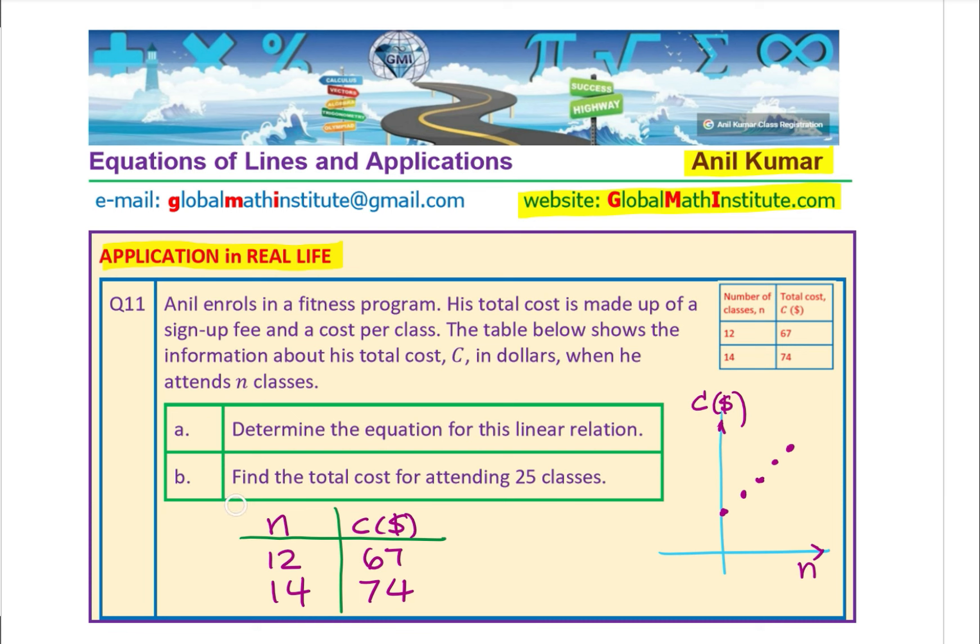The data given here is: if n, the number of classes, is 12, the cost is $67, and for 14 classes, the cost is $74. Based on this information, you have to provide the equation for this linear relation between cost and number of classes, and then find the total cost for attending 25 classes. If you want to learn from me, you can always send an email or visit our website.